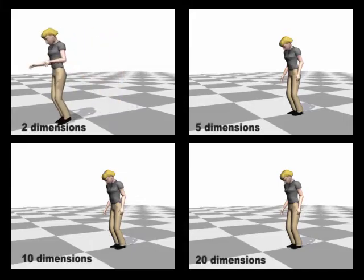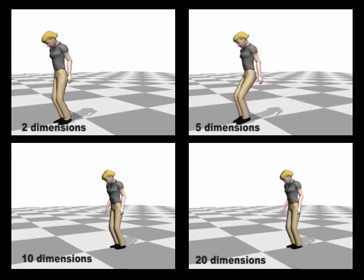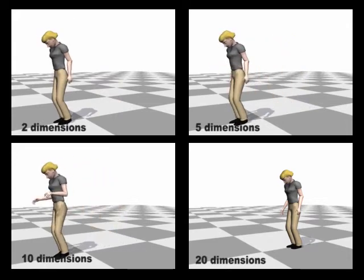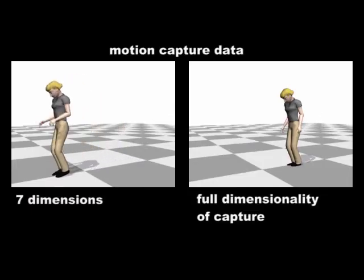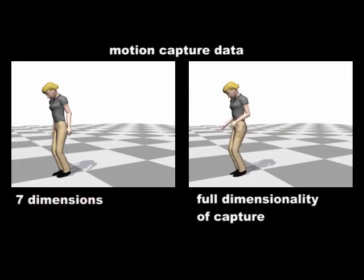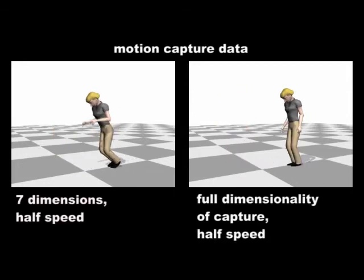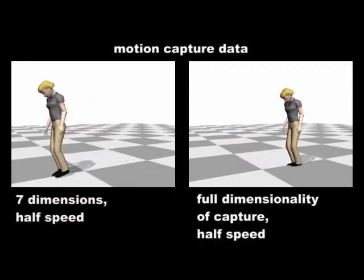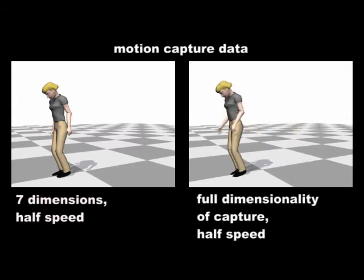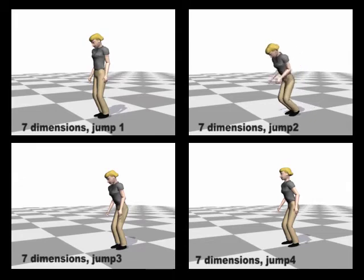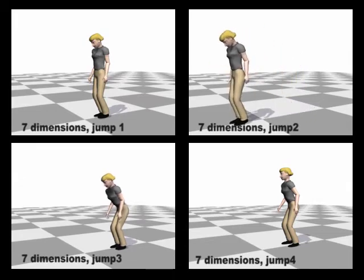Two, five, ten, and twenty-dimensional projections of a jumping motion onto a basis computed from twenty different jumps. A seven-dimensional projection is compared to the captured motion. Seven-dimensional projections of four different jumps onto the same basis.